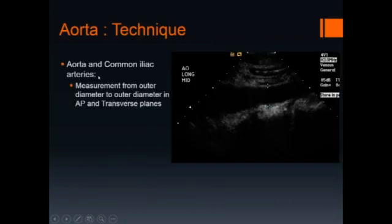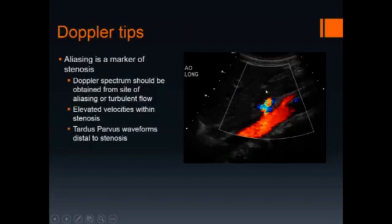Technique. Measure the aorta and common iliac arteries from the outer diameter in the AP and transverse planes. Doppler tips: aliasing is a marker of stenosis. The Doppler spectrum should be obtained from the site of aliasing or turbulent flow.